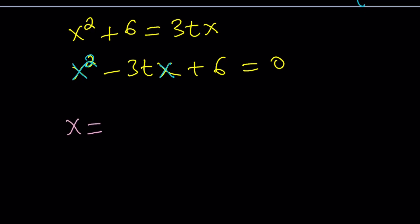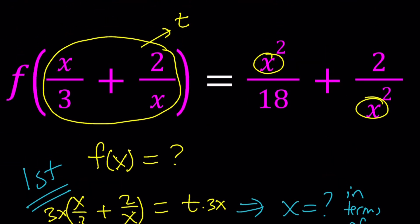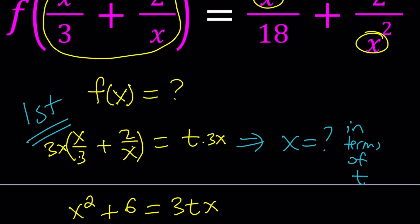So here x will be negative b plus minus the square root of b squared, which is 9t squared, minus 4ac, which is going to be 24. Awesome. And then what do you get from here? You get x in terms of t. Good luck with that, right?